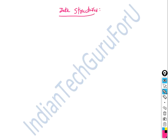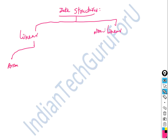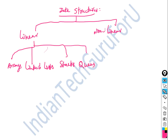We can interpret data structures. Data structures are of two kinds: linear and non-linear. Linear data structures include arrays, linked lists, stacks, and queues. Non-linear data structures include trees and graphs.